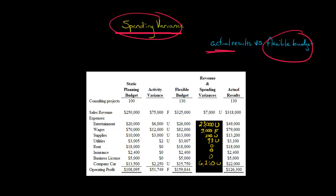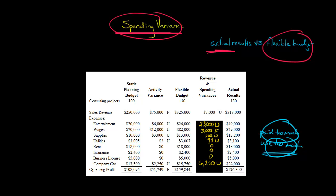So we've now identified a number of spending variances across all these line items. You might look at the supplies variance — the $200 unfavorable — and wonder: is that because we paid too much for supplies, or because we used too many supplies? Who should we talk to: the purchasing agent about price, or the people actually using the supplies about usage? There is actually a way with variance analysis to break that out and determine whether we paid too much or used too much. We'll get more in depth with that when we go further into variance analysis.